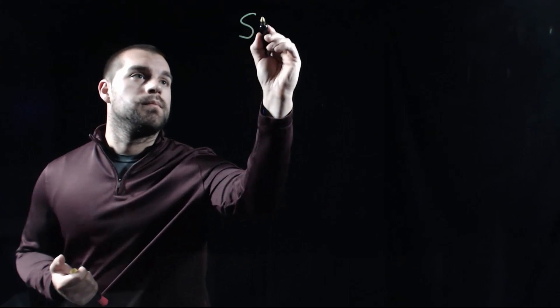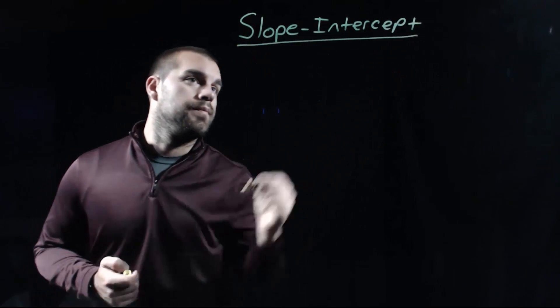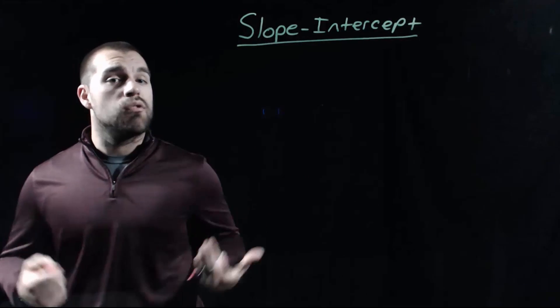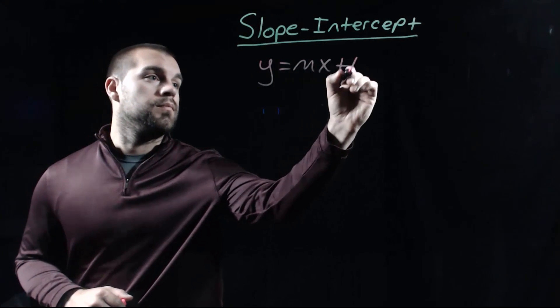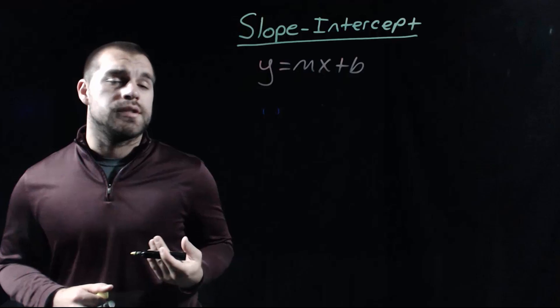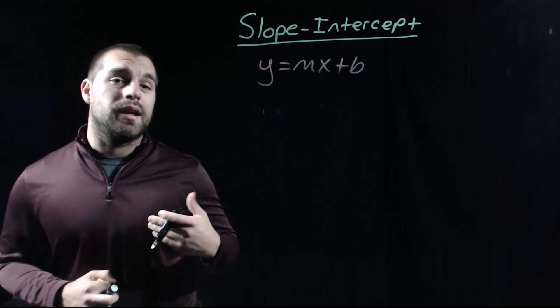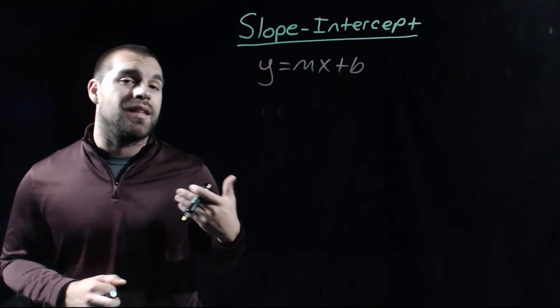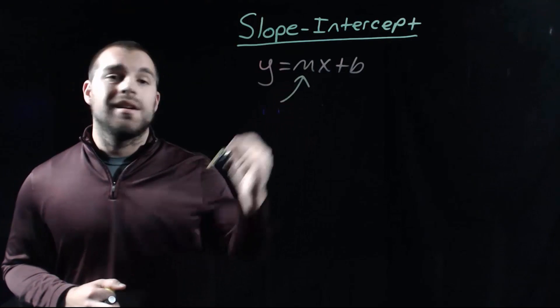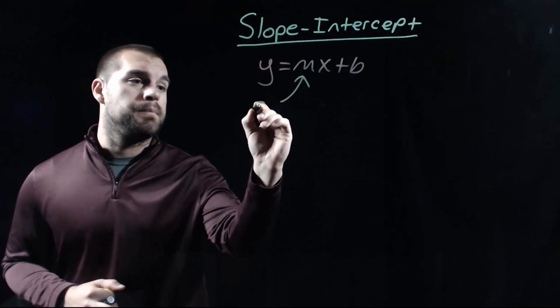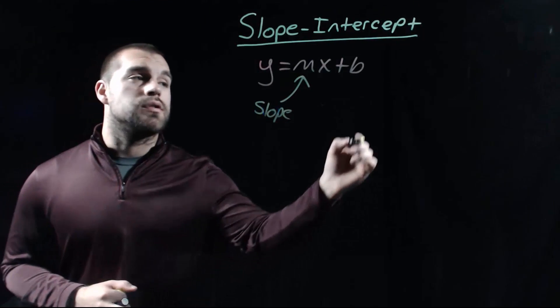There are a couple different ways that we can write out linear equations, but the one that we're going to use the most is called slope-intercept form. You may remember slope-intercept form — it looks like y equals mx plus b. This is called slope-intercept form because it's really easy to identify the slope and the y-intercept. m stands for our slope, and the b value on the end is our y-intercept.